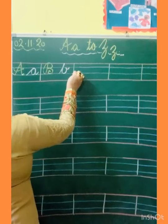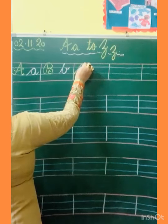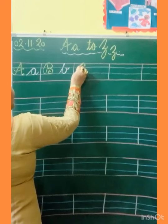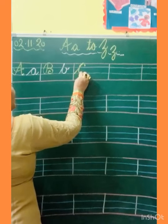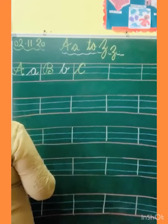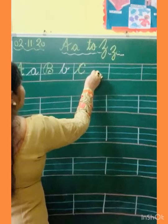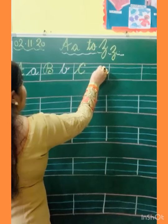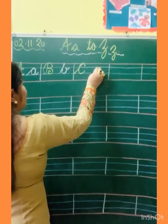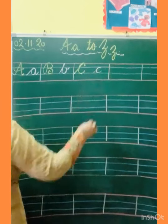Now capital C. Touch the third line, slanting line, turn, make C, and kick. And small C: slanting line, in the center line you have to make C.